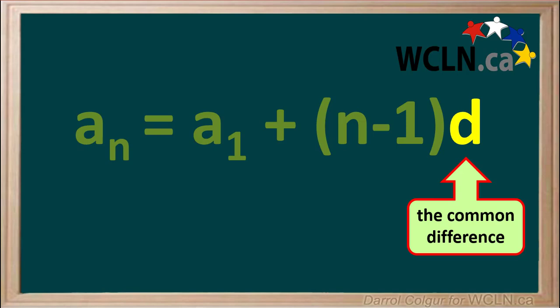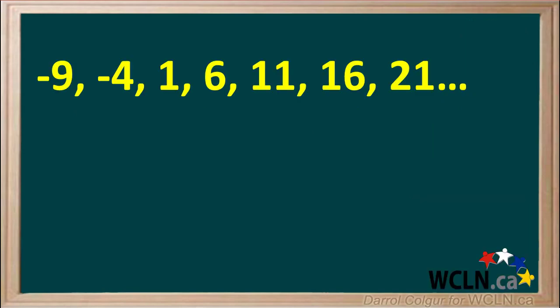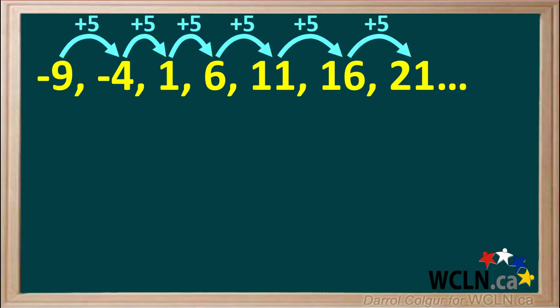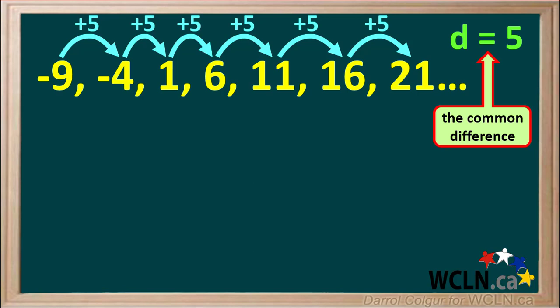Now we'll do an example to show how this equation can be used. Have a look at this sequence and see if you can find the common difference. We see that if we add 5 to each term, we get the value for the next term. For example, negative 9 plus 5 equals negative 4; negative 4 plus 5 equals positive 1; positive 1 plus 5 equals 6, and so on. So the common difference d is equal to 5.